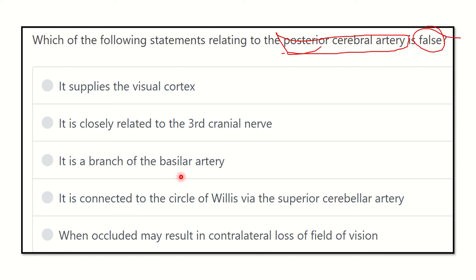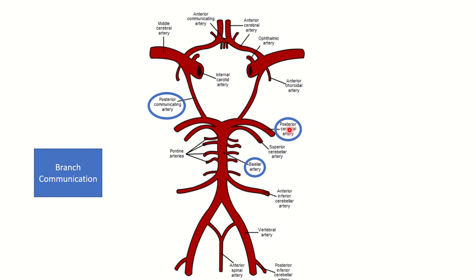We need to know in detail about the posterior cerebral artery. Here we can see this is the posterior cerebral artery, and it arises from this large artery — the basilar artery. The basilar artery is formed by two vertebral arteries. So two vertebral arteries form the basilar artery, and the basilar artery terminates into two posterior cerebral arteries. The posterior cerebral artery is a branch of the basilar artery.